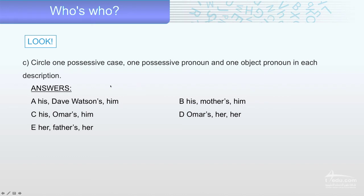Let me explain again. The possessive case is 'Watson's' — Dave Watson's. The possessive pronoun is 'his' — it belongs to him. The object pronoun is 'him.' 'Him' is an object pronoun.